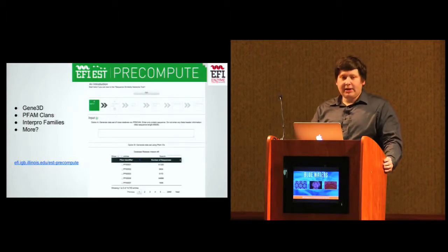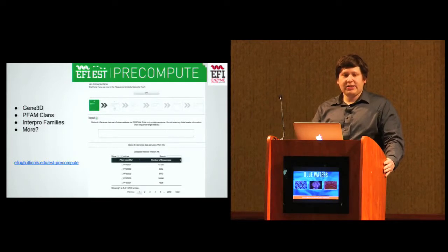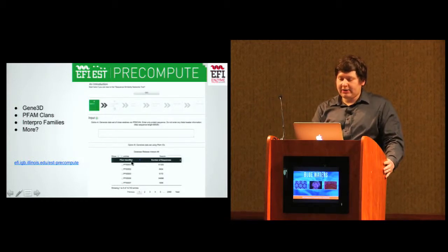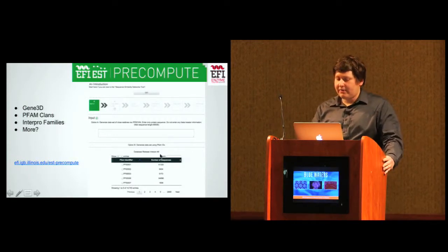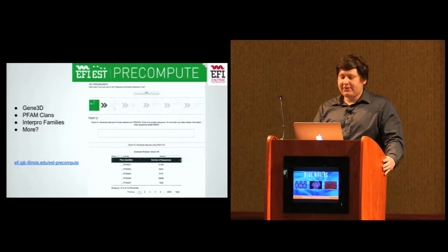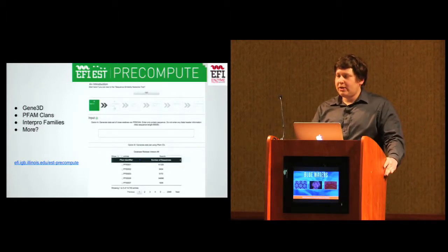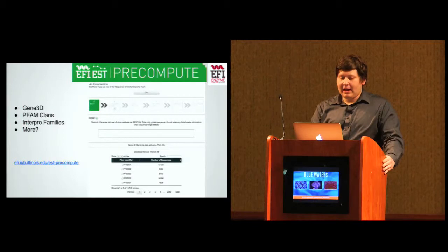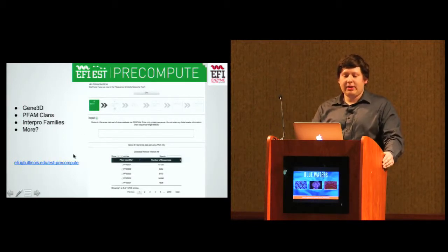It's also a hub for data analysis with fast sequence similarity network filtering and graphical plots showing the distribution of data inside the networks. We currently have release 48 available with over 99% coverage of the PFAM families. We have InterPro release 50 that's in progress. We also want to use our allocation to generate more databases for Gene3D, PFAM clans, InterPro families, more databases of proteins to provide for the community. It's available at efi.igb.illinois.edu/est-precompute.